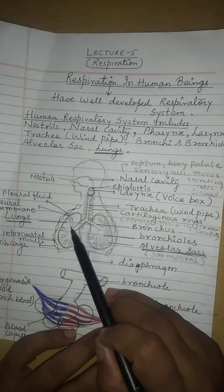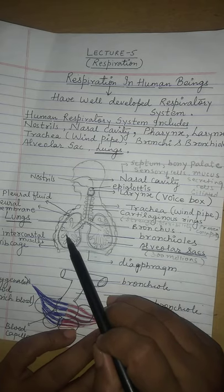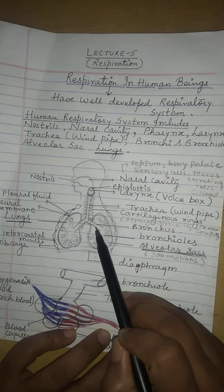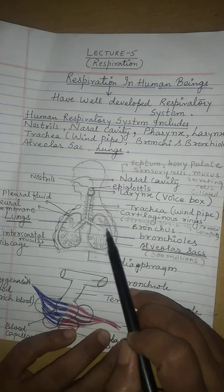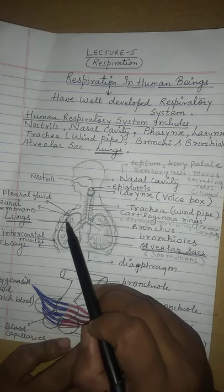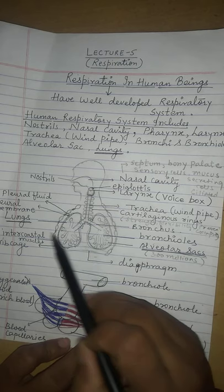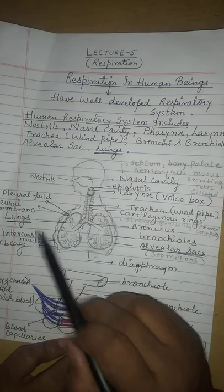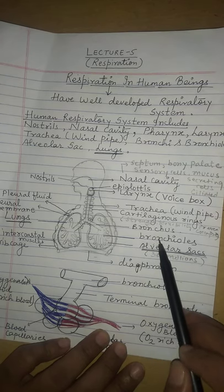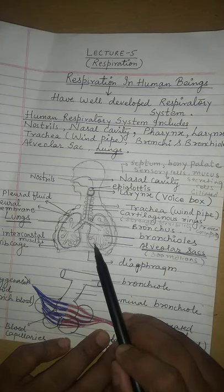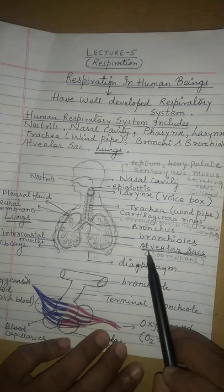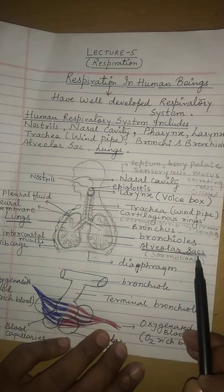The bronchus further bifurcates into smaller and smaller tubes called bronchioles. The bronchi and bronchioles are found inside the lungs, which are the main organ of our respiratory system. All bronchioles terminate in small, rounded, balloon-like sac structures called alveolar sacs.